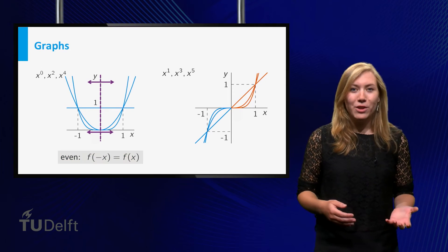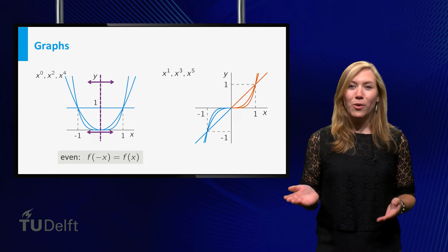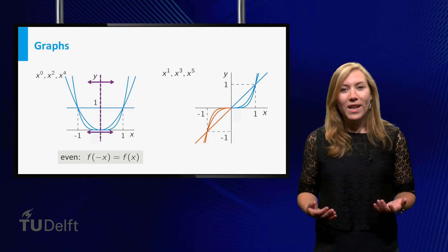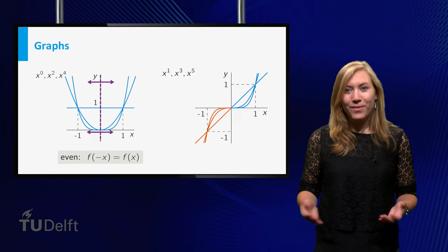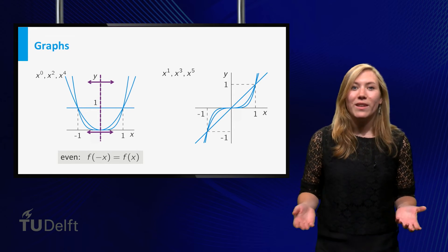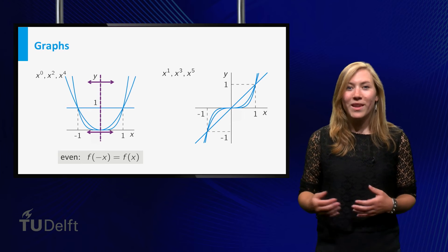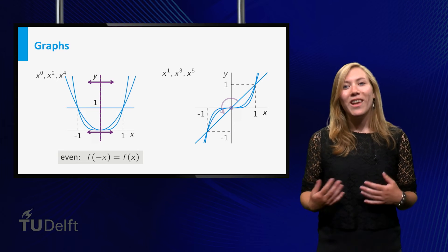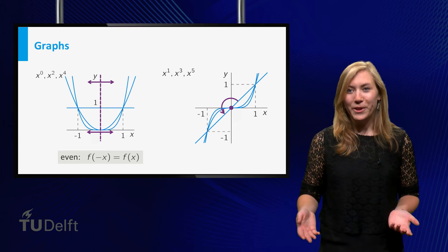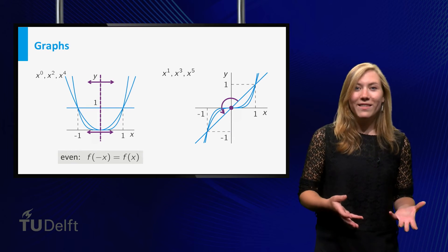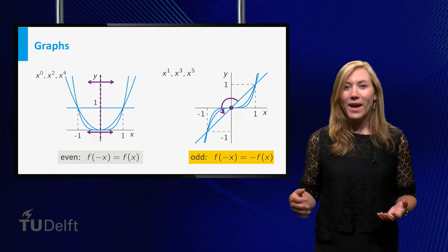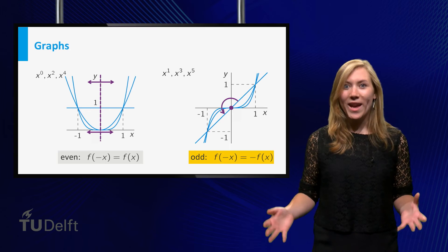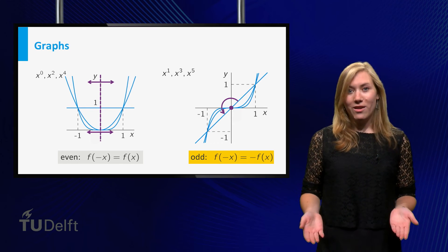For odd powers, we also see quite similar graphs. You can first reflect the graph in the vertical axis and then in the horizontal axis, and you will end up with the same graph. Another way to look at it is as follows. If you rotate it half a turn around the origin. We say the graph is point symmetric in the origin. In formulas, this means that f of minus x equals minus f of x for all x. Such functions are called odd.